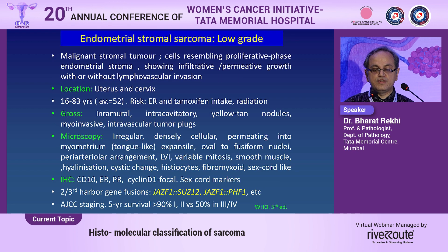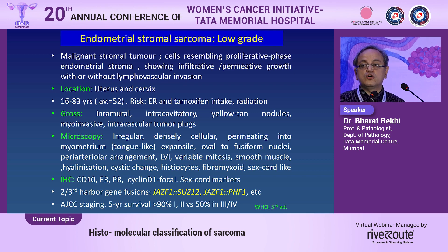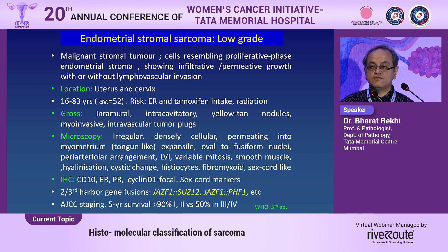Low-grade endometrial stromal sarcoma is a tumor histologically resembling the proliferative phase of the endometrial stroma. It shows an infiltrative or permeative growth pattern with or without lymphovascular invasion. These tumors occur predominantly in the uterus and also in the cervix over a wide age range, with an average of 52 years. Risk factors include estrogen intake, tamoxifen, and radiation. Grossly, they appear as intramural, intracavitary yellow-tan nodules which are myo-invasive with intravascular tumor plugs — a 'bag of worms' appearance seen on imaging.